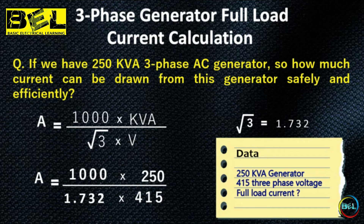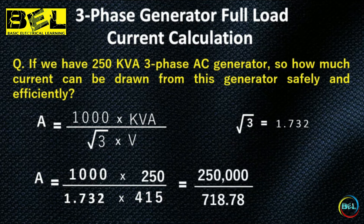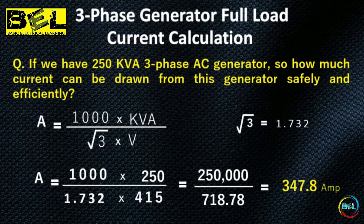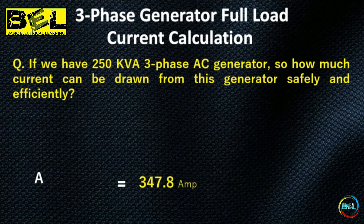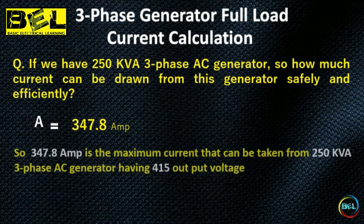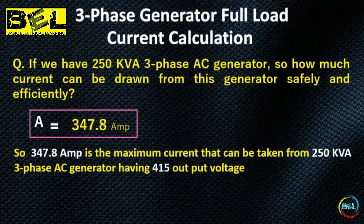We will calculate the current using a calculator. By substituting: A = 250,000 / (1.732 × 415) = 250,000 / 718.78. Performing the division, we get the maximum current that can be drawn from the three-phase AC generator: 347.8 ampere. That is the maximum full load current.